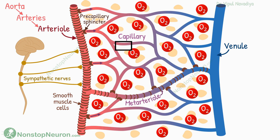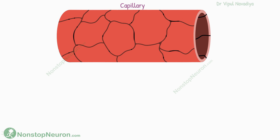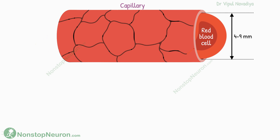Now come to the capillary itself. Its internal diameter is 4 to 9 micrometers. It's barely large enough for red blood cells and other cells to squeeze through. In fact, the small size of the capillary lumen brings the surface of RBCs close to the wall of the capillary, so the exchange of gases can happen rapidly.